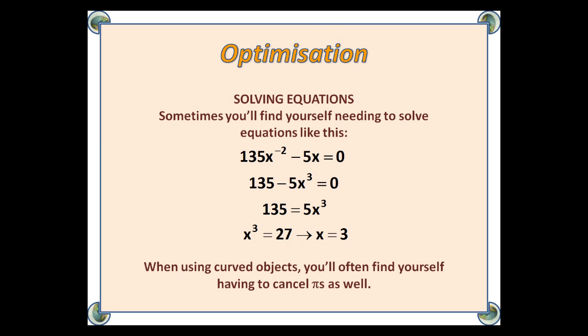Solving equations. Sometimes, you'll find yourself needing to solve equations like this one: 135x⁻² - 5x = 0. In which case, we would times through by x², and we get 135 - 5x³. Then a bit of rearranging gives us x = 3. And, when using curved objects, you'll often find yourself having to cancel pies as well.